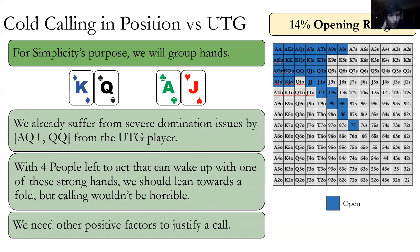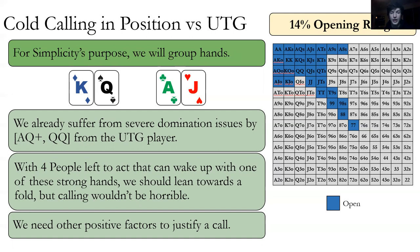Now let's consider cold-calling in position with these hands. Cold-calling just means you call before you've done anything else — it's just calling as your first action. King-queen off and ace-jack off are similar hands. Our king-queen will get wrecked when they have ace-queen, ace-king, or kings. So we suffer from domination issues. Same thing goes for ace-jack offsuit. It doesn't help that there are four players left to go if we're in the hijack.